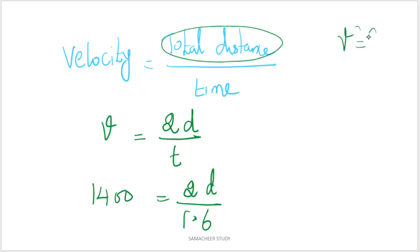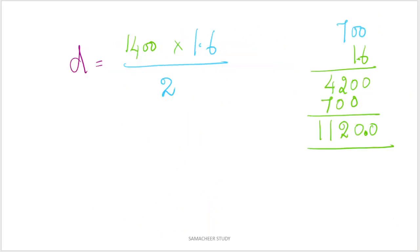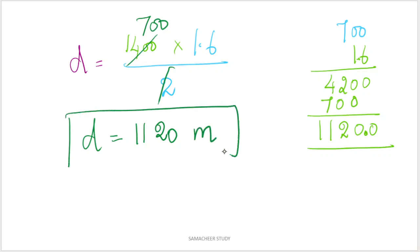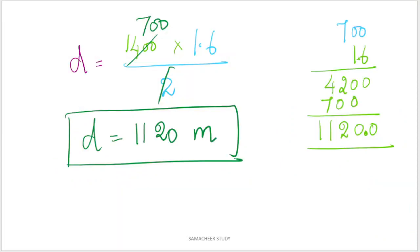Using the formula v = d/t, where total distance is 2d, we get v = 2d/t. Substituting: 1400 = 2d / 1.6. Cross multiplying: d = (1400 × 1.6) / 2 = 700 × 1.6 = 1120. So the depth of the sea, the distance between the ship and the sea bottom, is equal to 1120 meters.